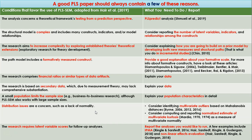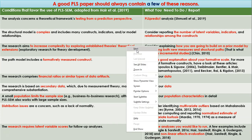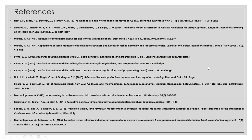Those were the conditions that favor the use of PLS-SEM along with some explanations about each of them. In the next video I will show you how to identify multivariate outliers and how to compute the normalized estimate of multivariate kurtosis as a measure of multivariate normality. I have also provided the references from the previous slide here for you. Thank you very much for watching.